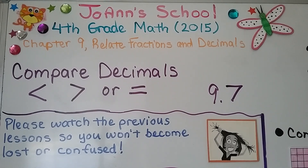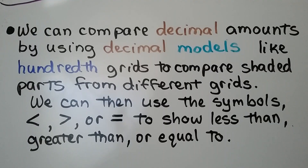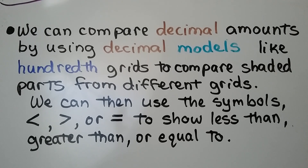Lesson 9.7: Compare decimals — less than, greater than, or equal to. We can compare decimal amounts by using decimal models like hundredths grids to compare shaded parts from different grids. We can then use the symbols less than, greater than, or equal to.